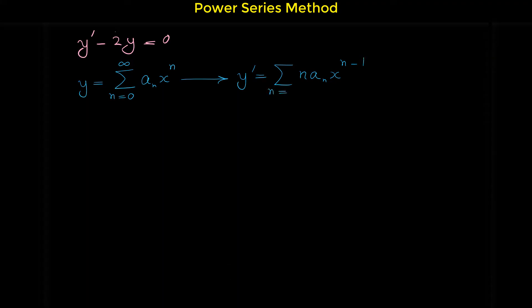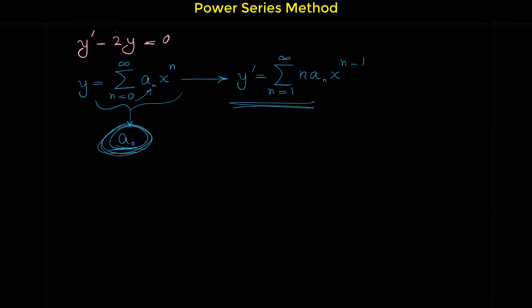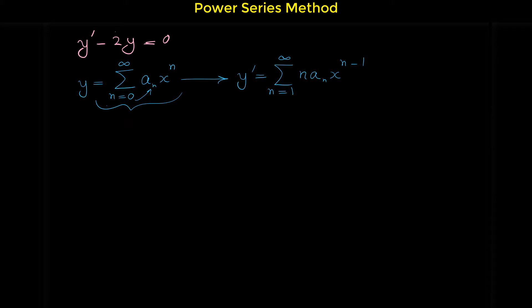Note that you have to start the sigma from 1 to infinity, not from 0 — this is very important. Why? Because in y, when n starts from 0, the first term is a sub 0 times x to the 0, which equals the constant a sub 0. The derivative of this constant is 0, so this term disappears in y prime. That is the reason we start n from 1 in y prime, not from 0.